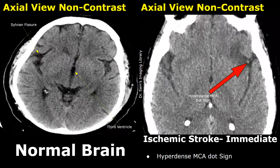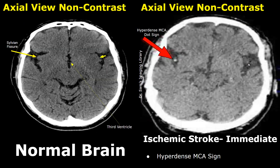A bright dot or hyperdense dot may appear in some cases of ischemic stroke. So instead of seeing a hyperdense MCA, we may see a hyperdense dot within the MCA. Here is another image showing a hyperdense MCA dot sign within the sylvian fissure.